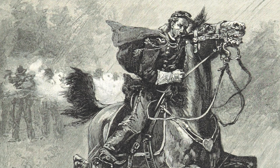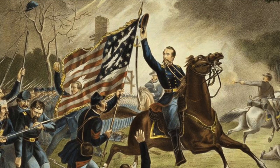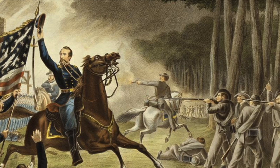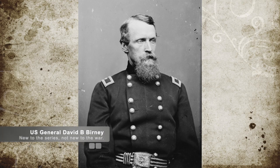Bad luck was not over for the Union yet, as General Kearney accidentally rode into the Confederate lines during the battle and was killed. Union Brigadier General David B. Birney — not to be confused with Kearney — took over for General Kearney and, with two brigades of reinforcements arriving, was able to act as a rear guard for Pope's forces.